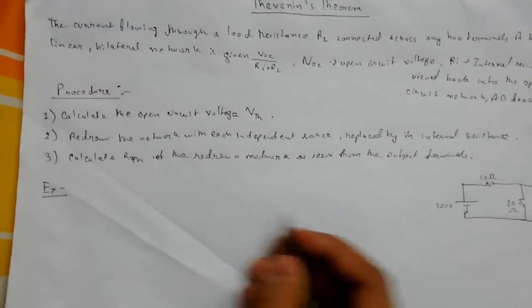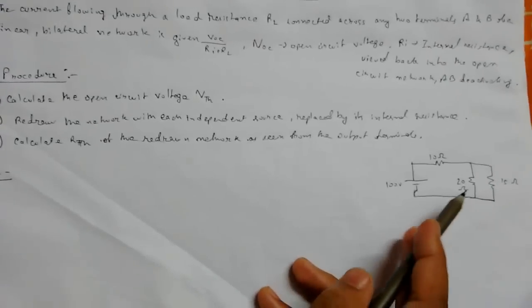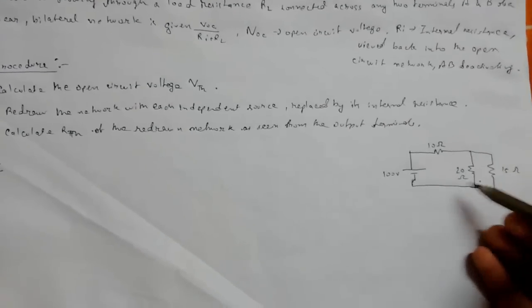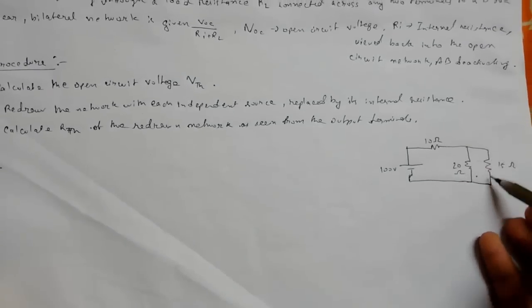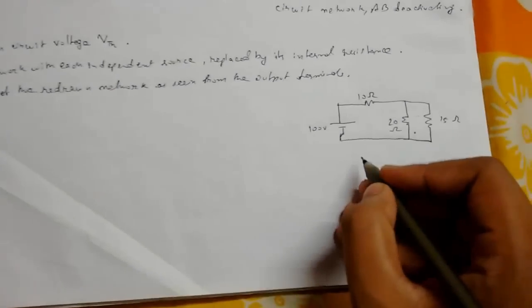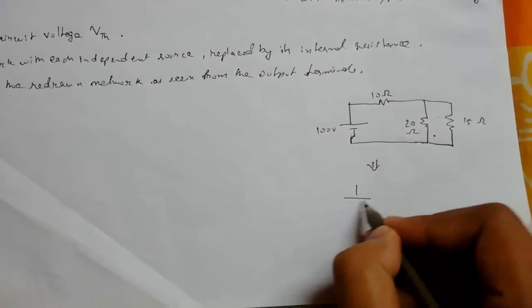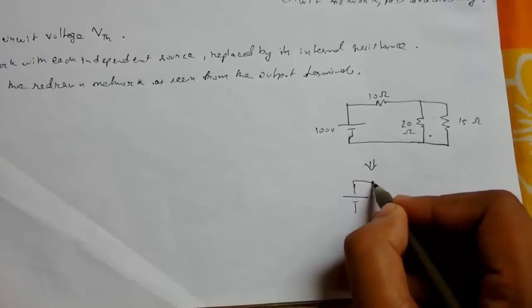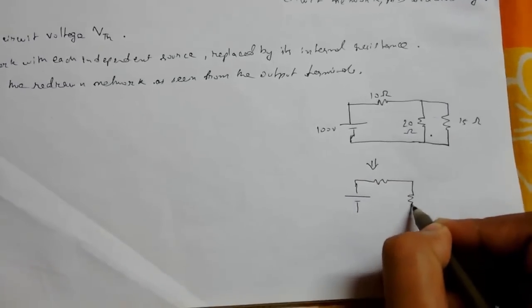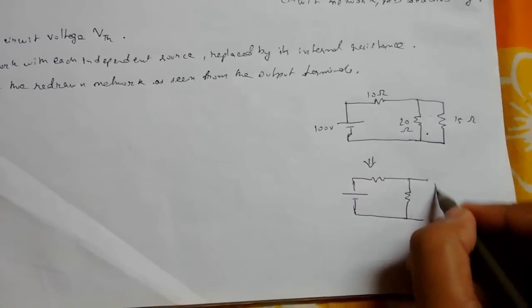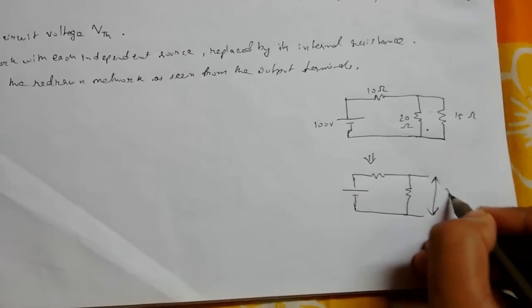We need to find the current flowing through the 15 ohm resistance looked across from these terminals. So to find the VOC, let me draw what I am meaning. So this will look something like this.